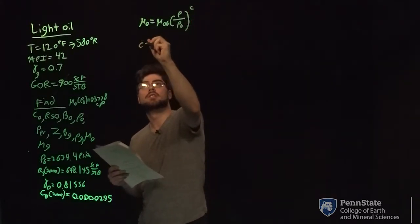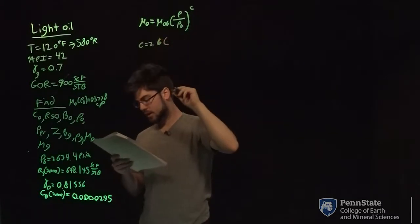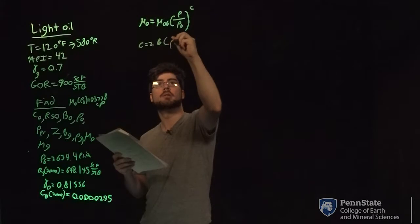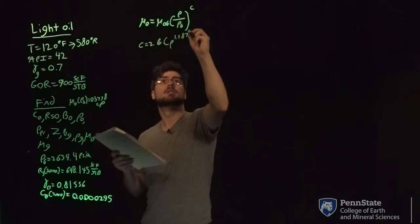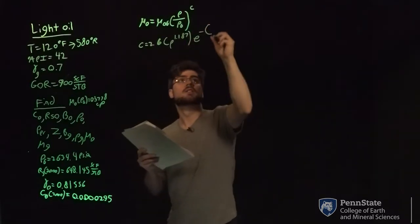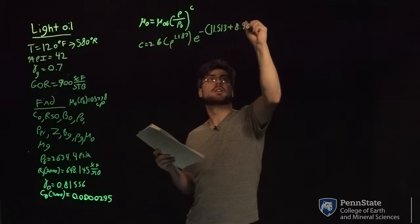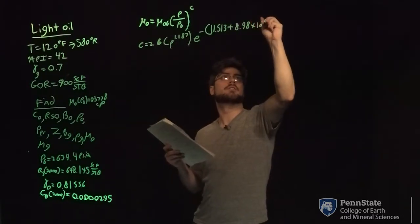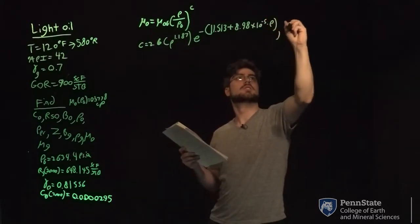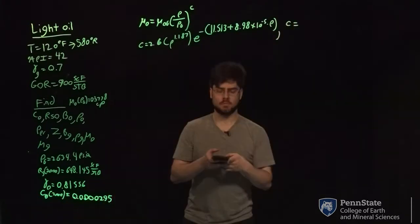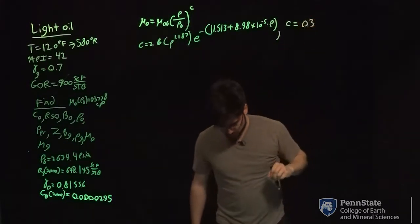The constant c comes from the equation: 2.6 times the pressure of interest, which is 4,000, raised to the 1.187, times e to the negative 11.513 plus 8.98 times 10 to the negative 5th times your pressure of interest, which is 4,000. So c is going to equal 0.3424.